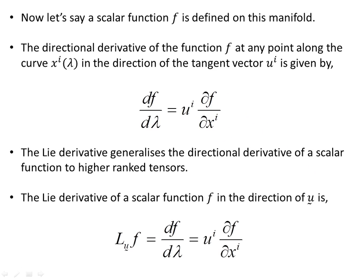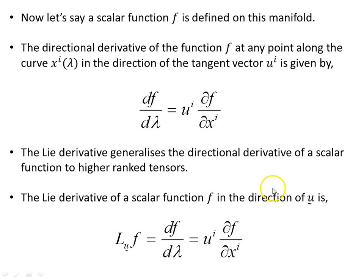Now let's say some scalar function f is defined on this manifold. Then the directional derivative of the function f at any point along the curve xi, in the direction of the tangent vector u^i, is given by df/d lambda = u^i * df/dx^i. The Lie derivative generalizes the directional derivative of a scalar function to higher rank tensors, and the Lie derivative of the scalar function f in direction u is just the usual directional derivative we're familiar with.